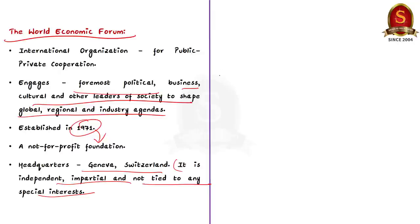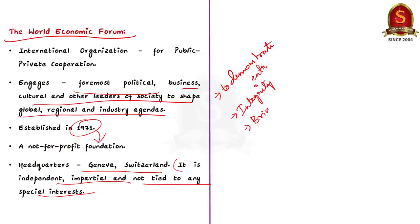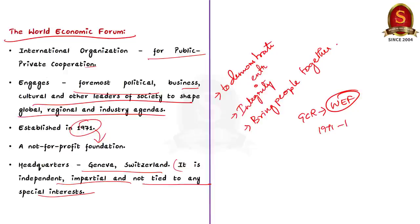The forum strives in all its efforts to demonstrate entrepreneurship in the global public interest while upholding high standards of governance. Moral and intellectual integrity is at the heart of everything it does. They believe that progress happens by bringing together people from all walks of life who have the drive and influence to make positive change. So the Global Competitiveness Report is published by the World Economic Forum — Option C is the correct answer.